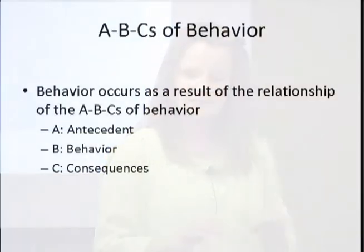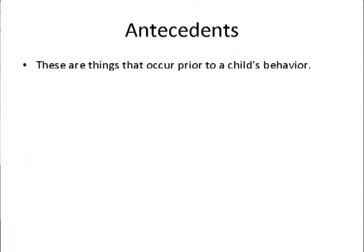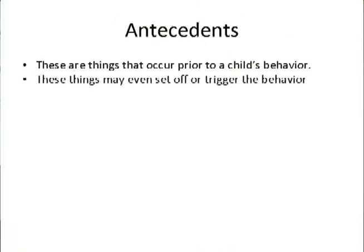If you think about ABCs: A stands for antecedent, B for behavior, and C for consequences. When we're talking about antecedents, those are things that happen before the child's behavior occurs. We often think of them as triggers or cues — something that sets your child off.